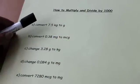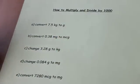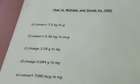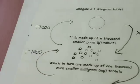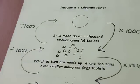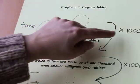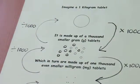The first one is convert 7.5 kilograms to grams. So I can go to my little diagram and decide that going from kilograms to grams means that I have to multiply by 1,000.